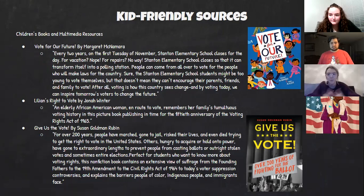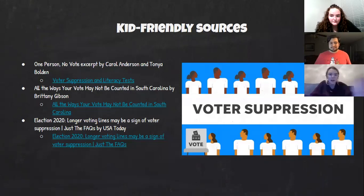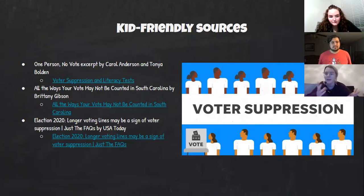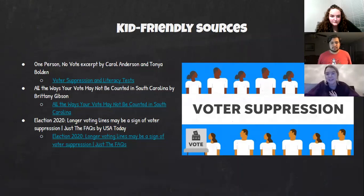Our internet sources include one from the Teaching Tolerance website. It talks about the history of literacy tests and how African American education wasn't really funded, so these literacy tests were put in place making it impossible for Black Americans to vote — their vote wouldn't be counted and they didn't have a say in the government that was supposed to be serving them. The second link shows how tedious and finicky the voting process is and how small things can nullify your vote — another way of suppressing votes.